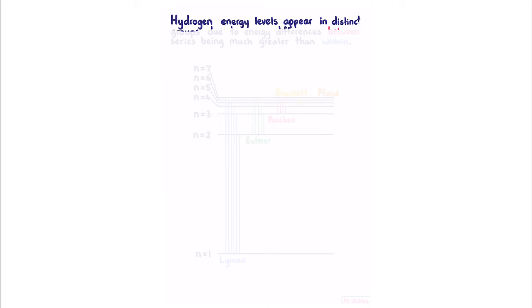Hydrogen energy levels appear in distinct groups due to energy differences between series being much greater than within.